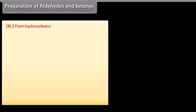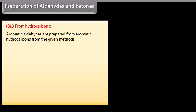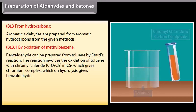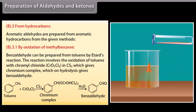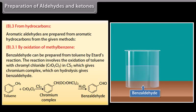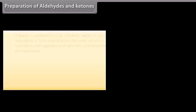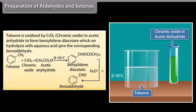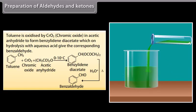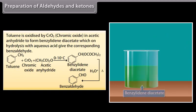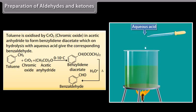Aromatic aldehydes are prepared from aromatic hydrocarbons by the following methods. By oxidation of methylbenzene: benzaldehyde can be prepared from toluene by Etard's reaction, which involves the oxidation of toluene with chromyl chloride in carbon disulfide. This gives a chromium complex which on hydrolysis gives benzaldehyde. Toluene is also oxidized by chromic oxide in acetic anhydride to form benzylidene diacetate, which on hydrolysis with aqueous acid gives benzaldehyde.